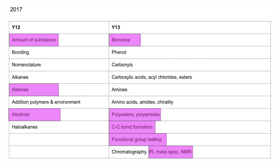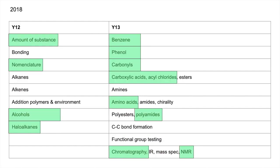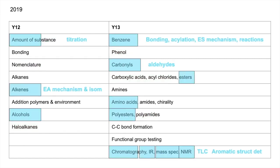So the first thing we'll do is just have a quick look at what's already been tested. 2017 saw those topics tested — you can see I've got a column there for Year 12 stuff and then the Year 13 stuff. 2018 saw those topics, and last year saw these topics being tested, and you'll see I've added a little bit of extra detail there.